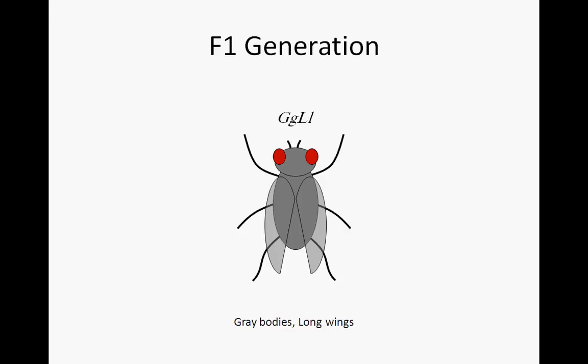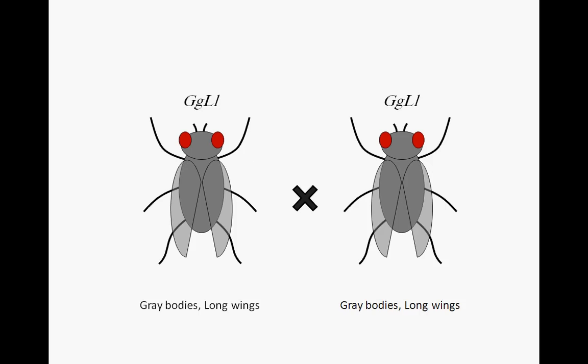Here is where gamete formation and offspring prediction gets a bit more interesting. Each individual in this cross can produce four possible gametes. To identify these gametes, remember that the law of segregation precludes the possibility of a gamete with two alleles for a single trait, ruling out big G, little G or big L, little L as options. Also remember that the law of independent assortment tells us that getting big G has no impact on which allele for wing length a gamete receives — big G does not necessitate big L, and little G does not necessitate little L.